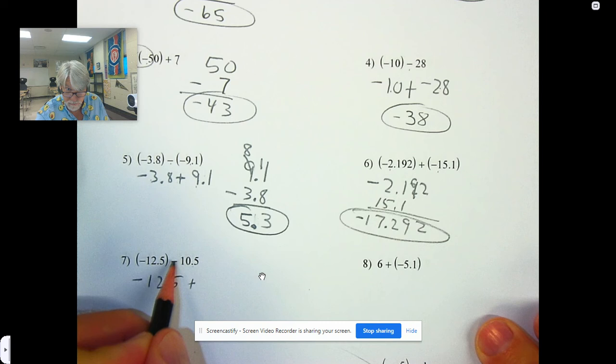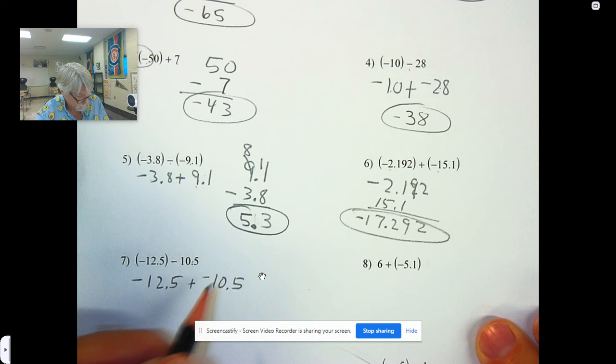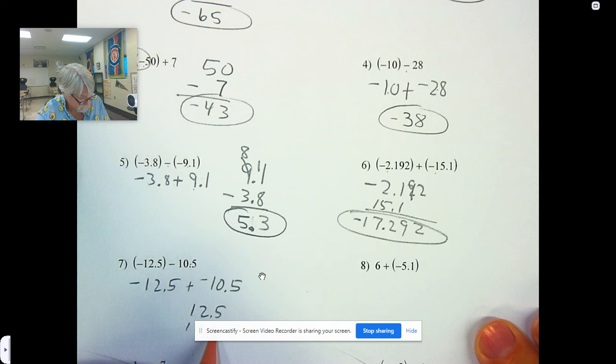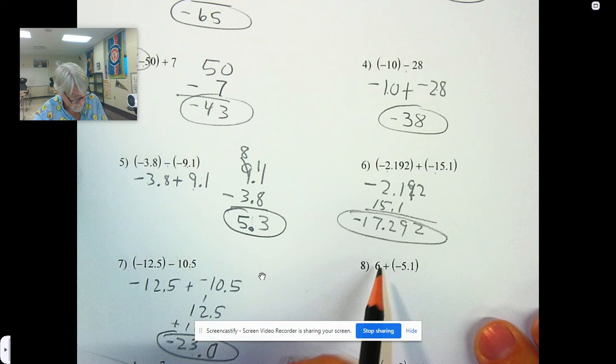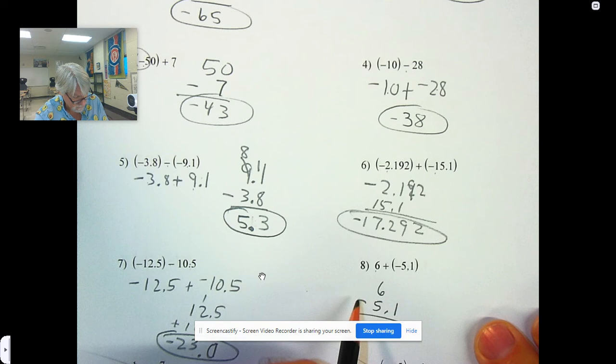So, I'm subtracting, change it to adding. Subtracting, change it to adding the opposite. Different signs when you're adding, subtract their absolute values.